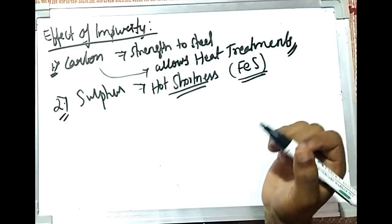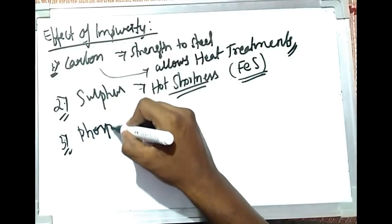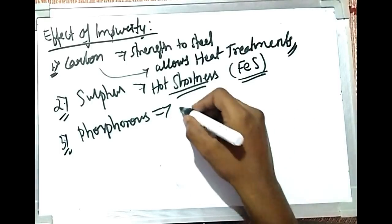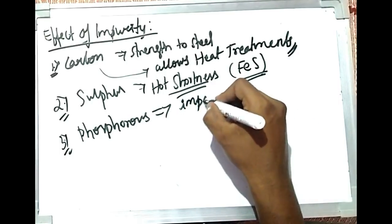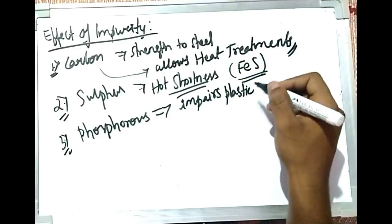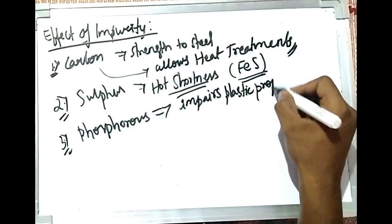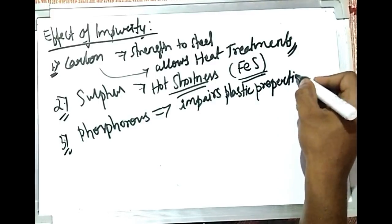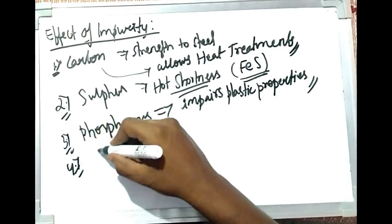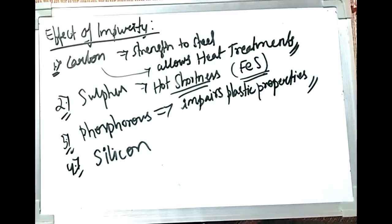The next important impurity is phosphorus. Phosphorus also segregates during solidification and impairs the plastic properties — that means it decreases ductility and imparts a brittle nature to the steel.